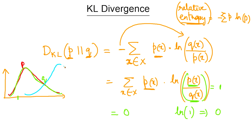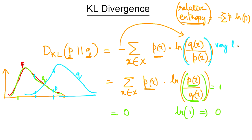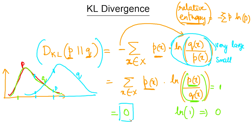Whereas if p and q are farther away from each other — let's say for a particular value of x, the value of q is much smaller compared to p, or conversely p is much smaller than q — in either of these cases this term within brackets will be either very large or a very small fraction. In either case this entire term will be away from zero, meaning the Kullback-Leibler divergence will be away from zero.